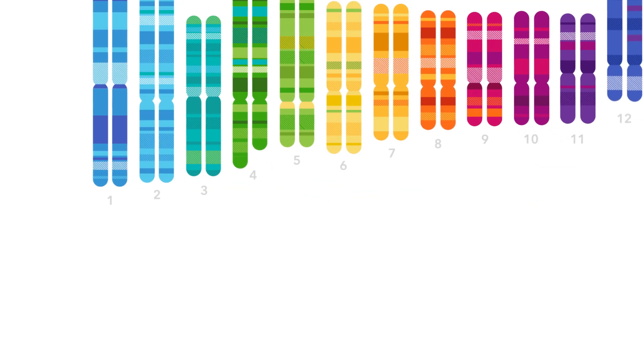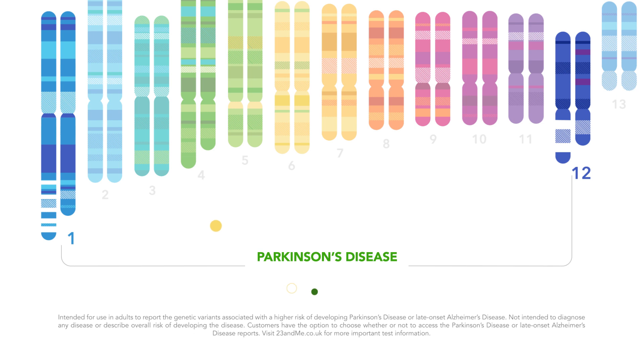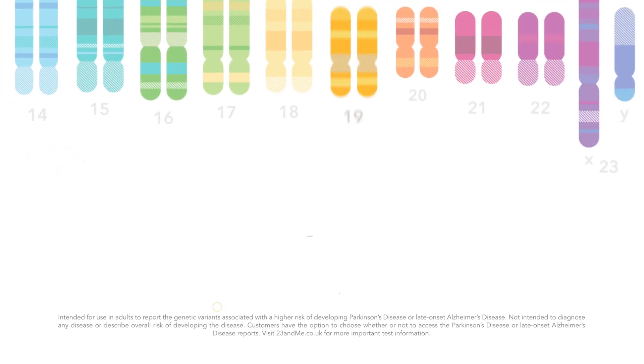If you choose to, you can opt in to receive genetic health risk reports like Parkinson's disease and late onset Alzheimer's disease. Free! Now there's only one thing left to do. We get to spit. We do?